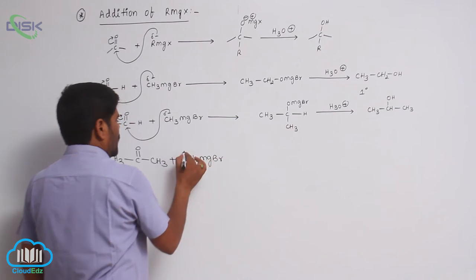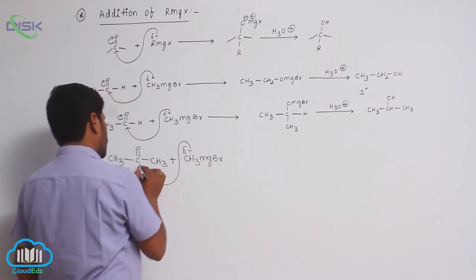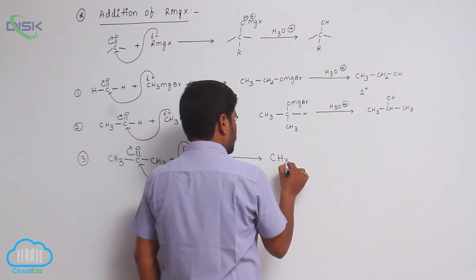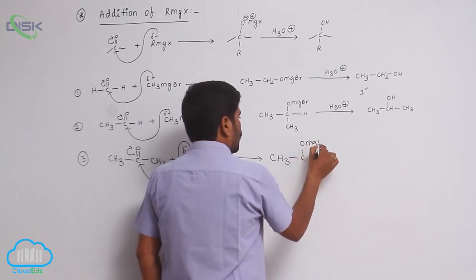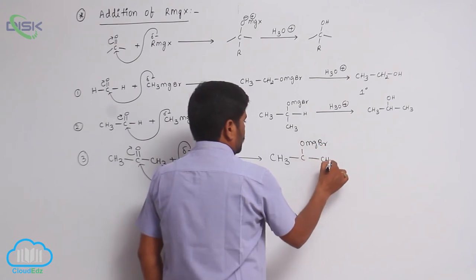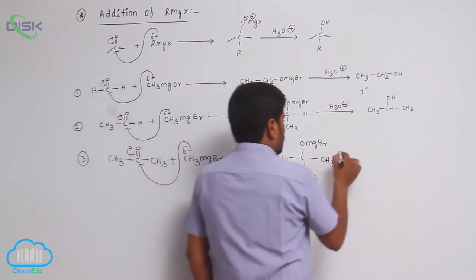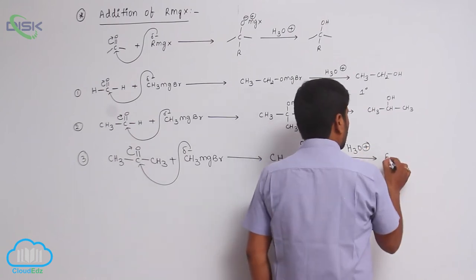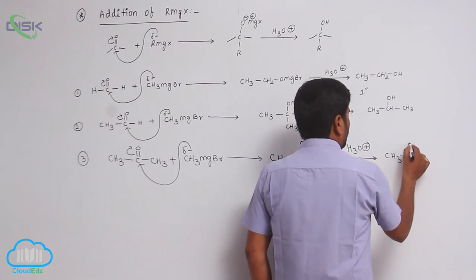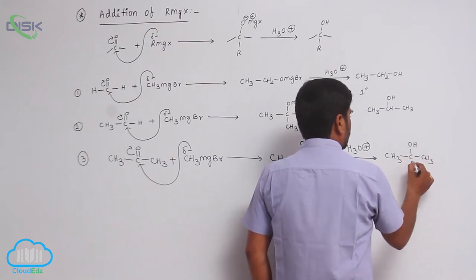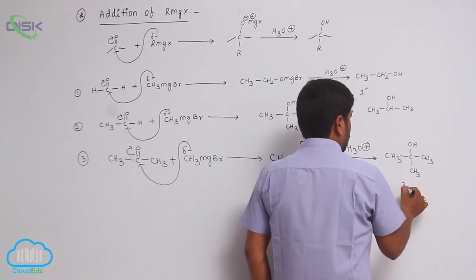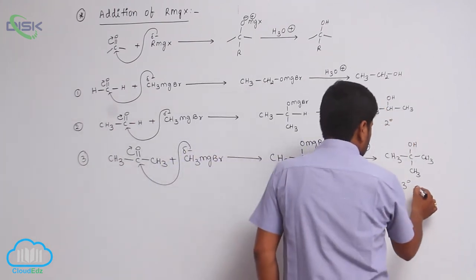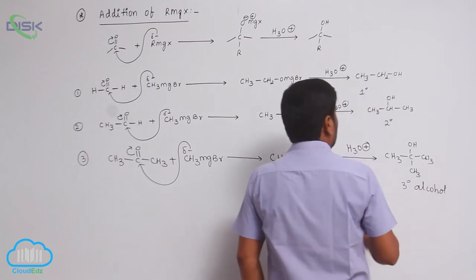When acetone reacts with methyl magnesium bromide, it forms an adduct with OMgBr and two methyl groups, then hydrolysis gives a tertiary alcohol.